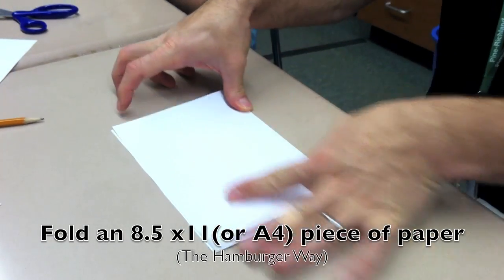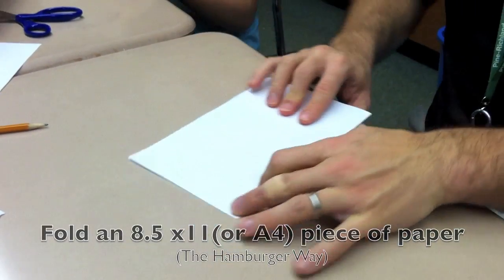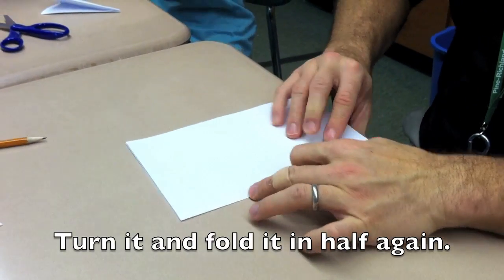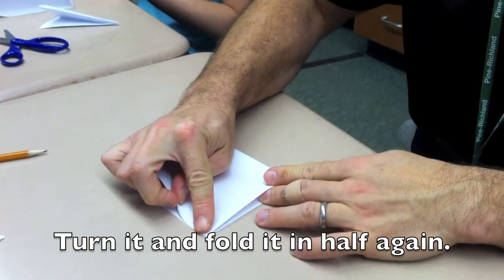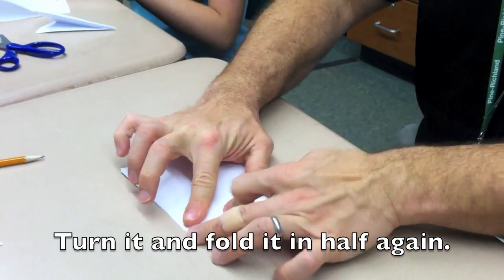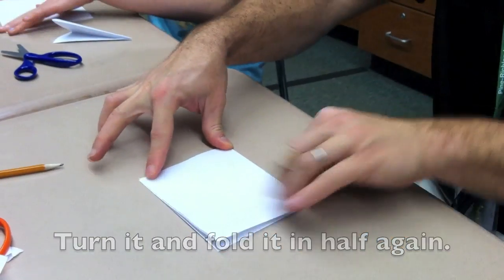First, take a piece of paper and fold it in half the wide way, the hamburger way. Then, fold it a second time so that you make it into a little rectangular booklet.